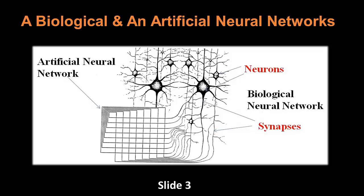Let's take a look at the biological and artificial neural networks. On the right-hand side, we see the biological neural network. On the left-hand side, we see the artificial neural network.